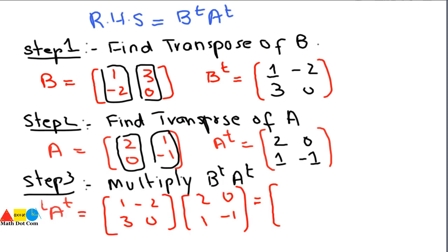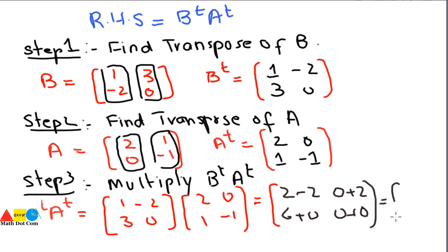Step 3 is to multiply B transpose and A transpose. Computing: 1×2 + (-2)×1 = 2 - 2 = 0; 1×0 + (-2)×(-1) = 0 + 2 = 2; 3×2 + 0×1 = 6 + 0 = 6; 3×0 + 0×(-1) = 0. So B transpose A transpose equals [0, 2; 6, 0], which is the same answer as AB whole transpose.